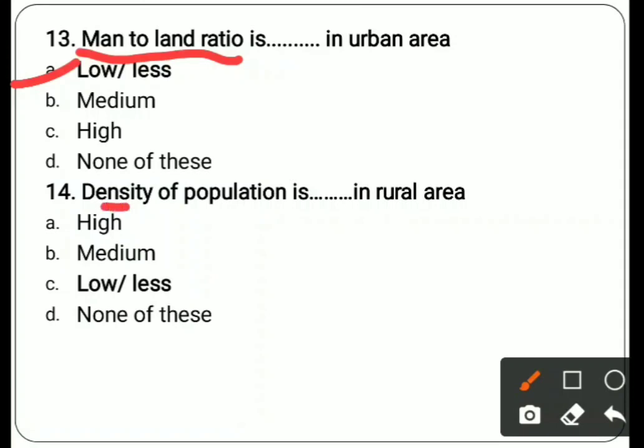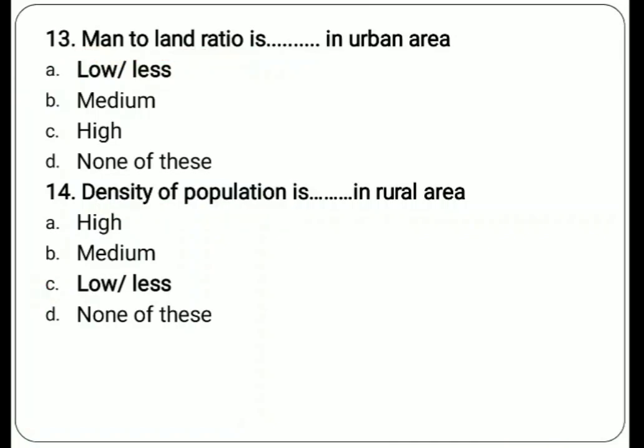Fourteenth question: density of population — population per square kilometer. The density of population in rural areas is low or less. Options are high, medium, low, none of these. Correct answer is low because population per square kilometer in rural area is low.